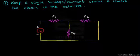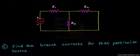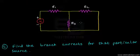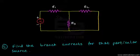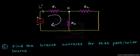Step two states: find the branch currents for the particular source. With V1 in this simplified network, we apply basic circuit laws — KCL and KVL — and assume branch currents. The total current from V1 is called I1'. This current flows around the loop and divides at node X, with one component through R2 and another through R3.